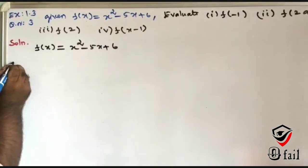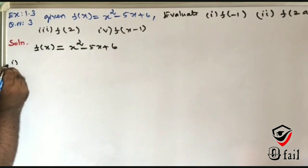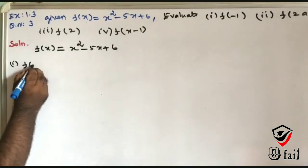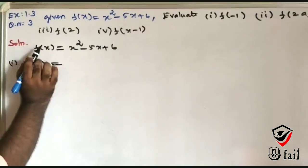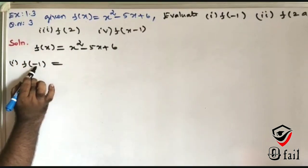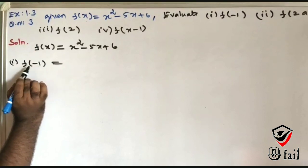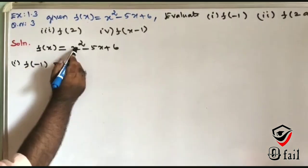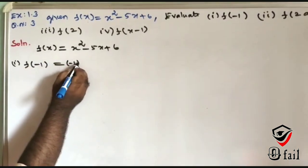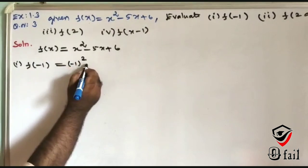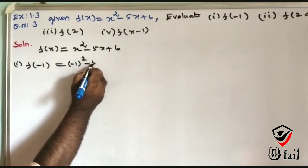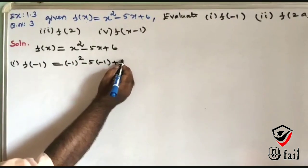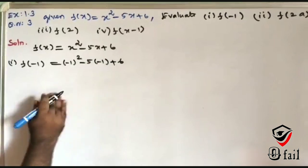First problem: F of minus 1. This means X is replaced by minus 1. So we get minus 1 squared minus 5 into minus 1 plus 6.